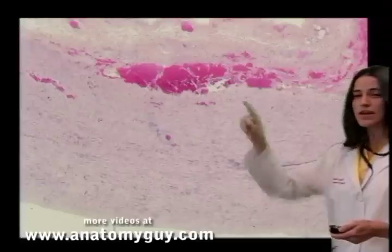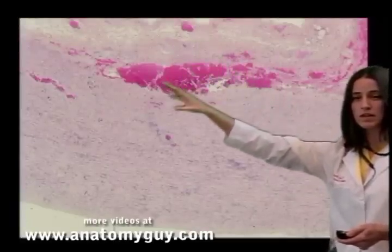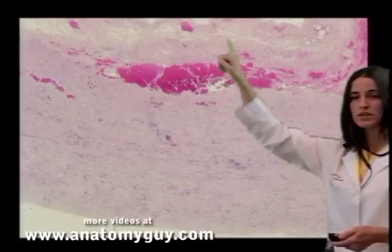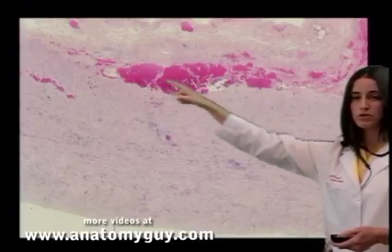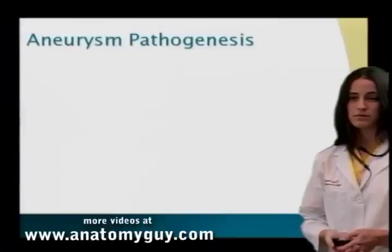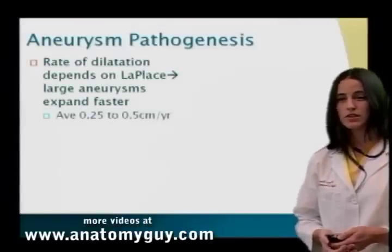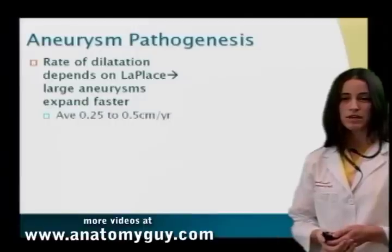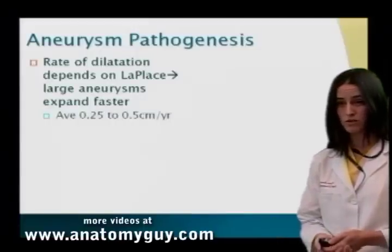In our histology lab image, we can see the lumen at the top of our screen with the intima, media, and adventitia. Here we can see a dissection where there has been a breach in the intima layer — blood is dissecting through with destruction of the media. For AAAs, the rate of dilatation depends on Laplace's law; large aneurysms expand faster than smaller ones, with an average expansion of 0.25 to 0.5 centimeters per year.